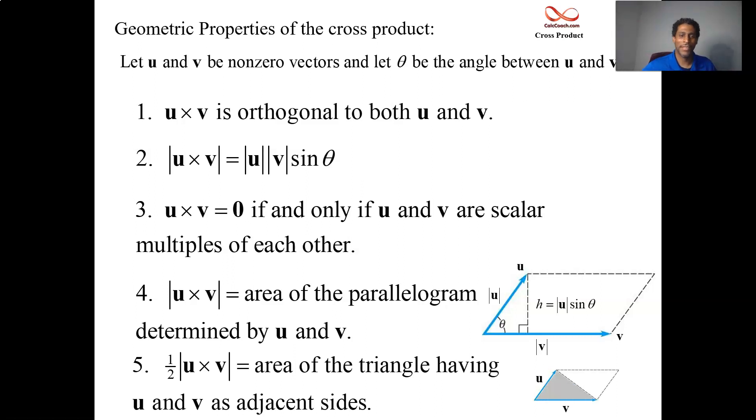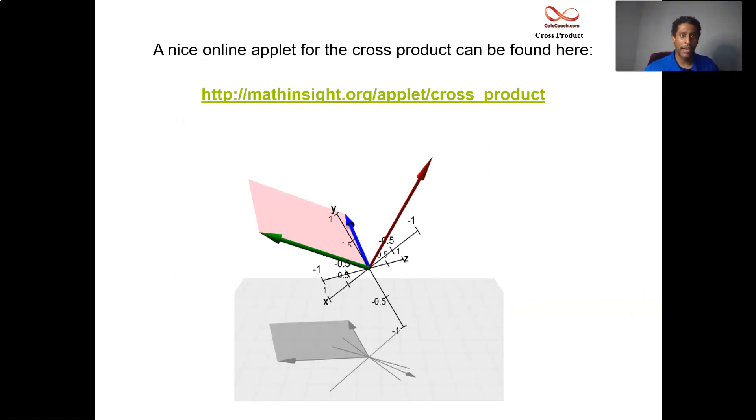So there we go. I want to take you to an applet that's online, a really nice applet, not made by me, mathinsight.org. It gets all the credit for the work here. Why I like this applet so much is it allows you to take and manipulate the vectors, and what comes out in red is the cross product. So you can take the blue and green, cross them, and get the red. Let's go to it.